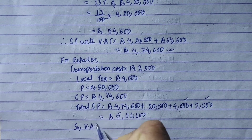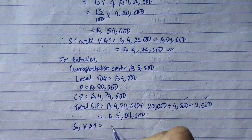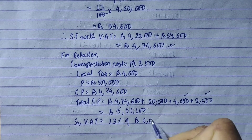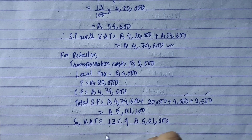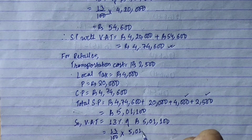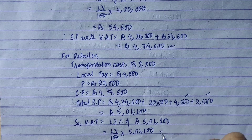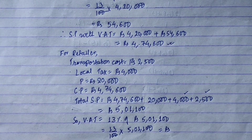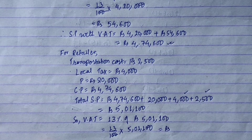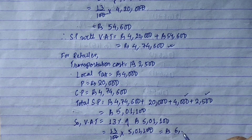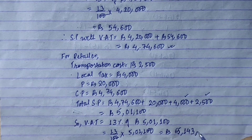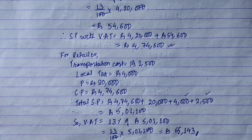Now we calculate 13 percent of rupees 5,01,100. Simplifying: 5,01,100 into 13 upon 100 gives rupees 65,143. So the customer pays rupees 65,143 as VAT.